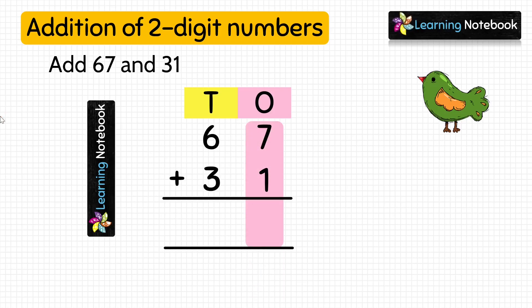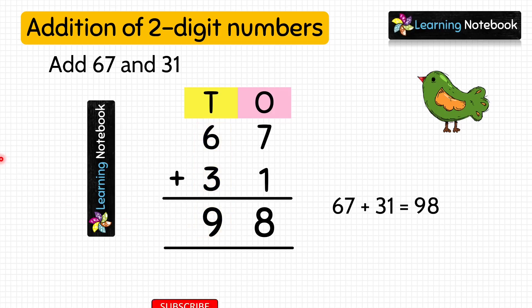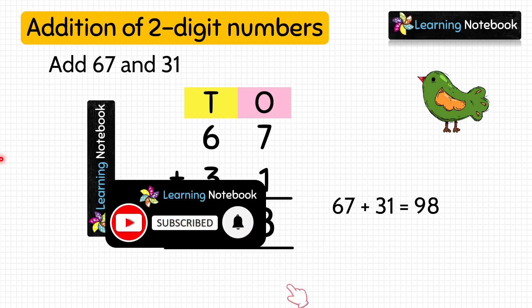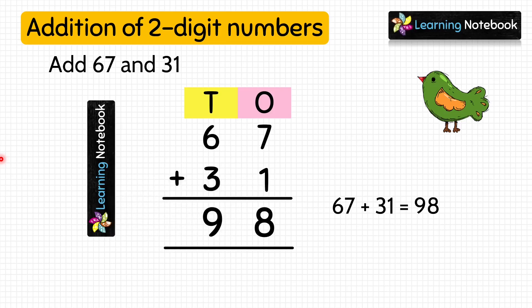So 7 plus 1 equals 8. Now add the digits at tens place. 6 plus 3 equals 9. So the answer is 98. 67 plus 31 equals 98.